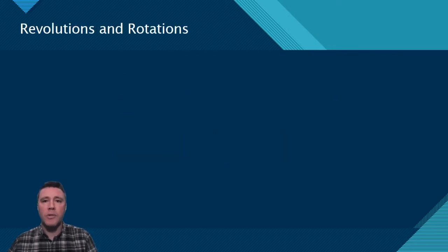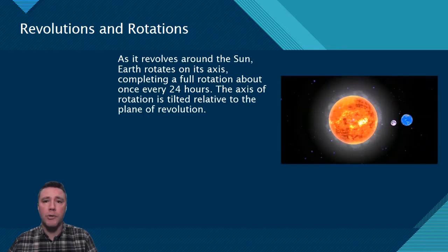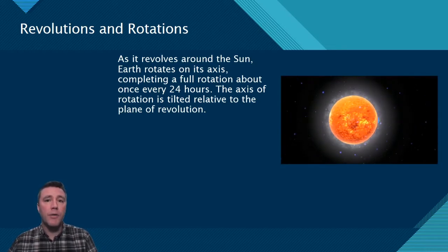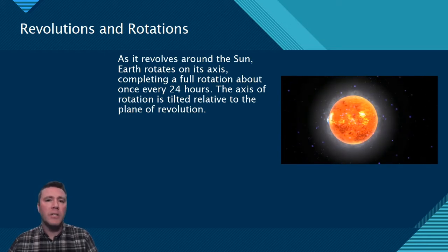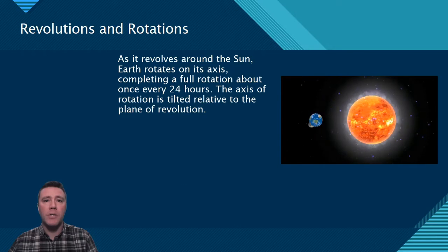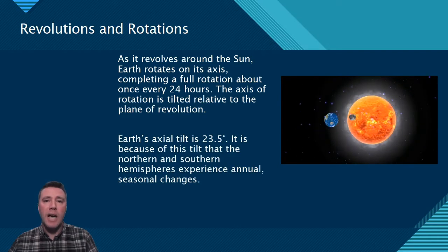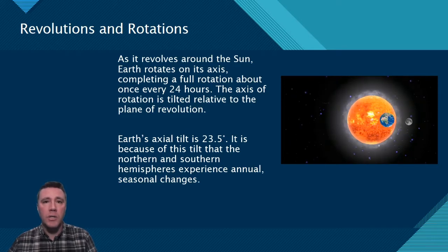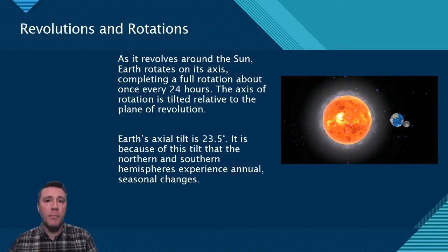Earth's annual motion around the sun is referred to as a revolution. 365 times a year, Earth completes a rotation on its axis. Relative to the imaginary plane of revolution around the sun, Earth's axis is tilted 23.5 degrees. It is this axial tilt that results in the characteristic seasonal changes experienced by the northern and southern hemispheres outside of the tropics.